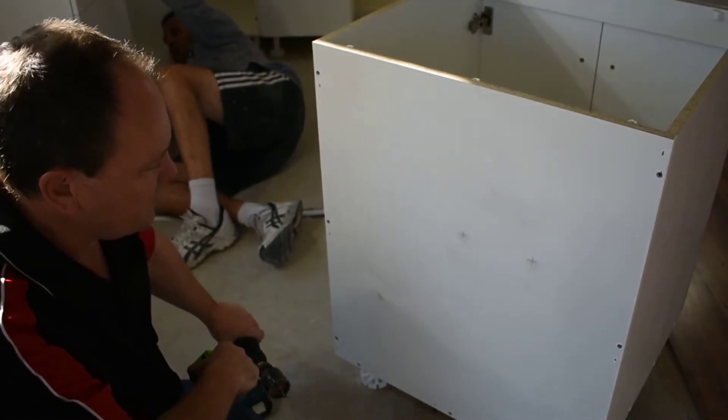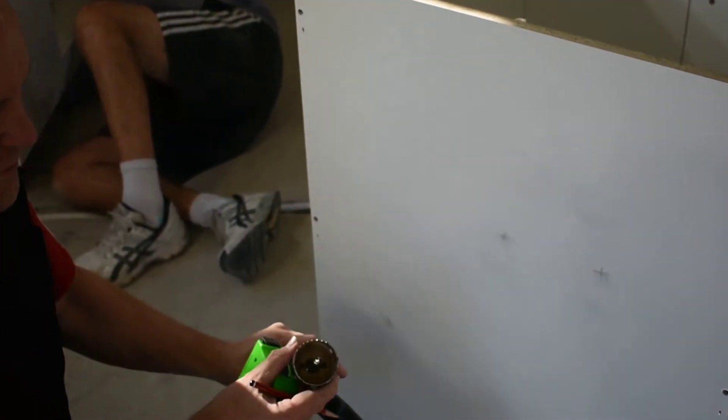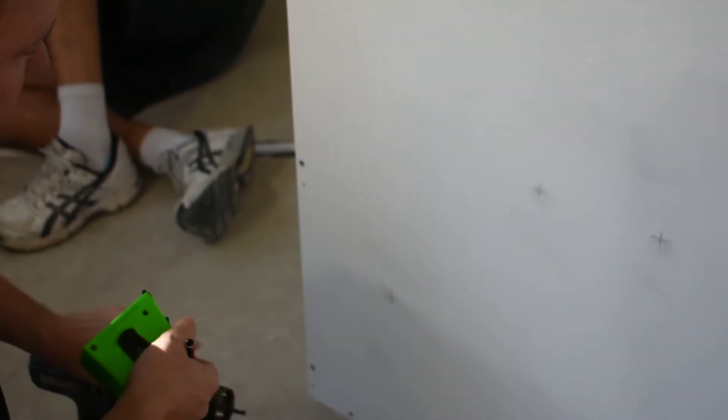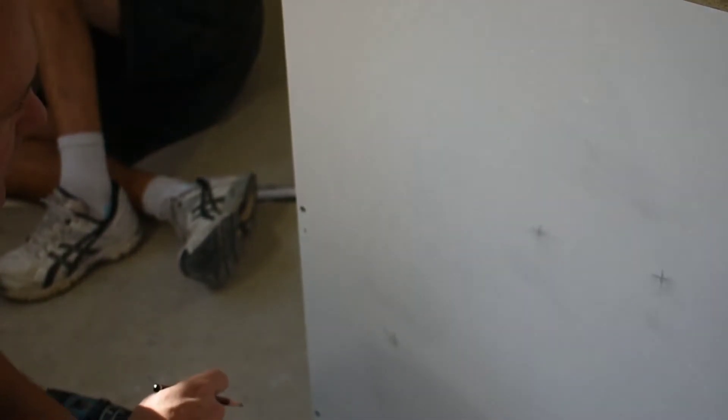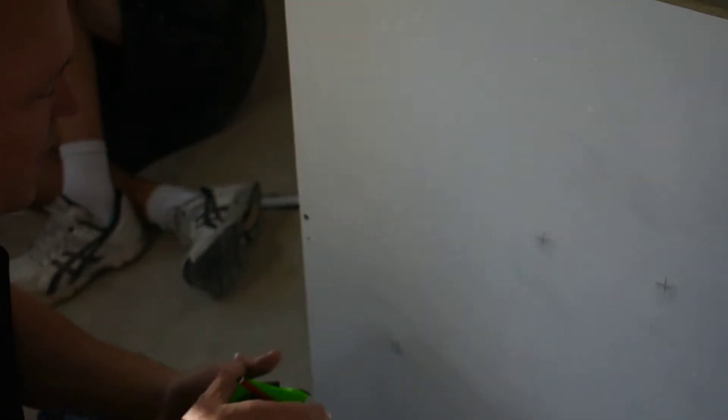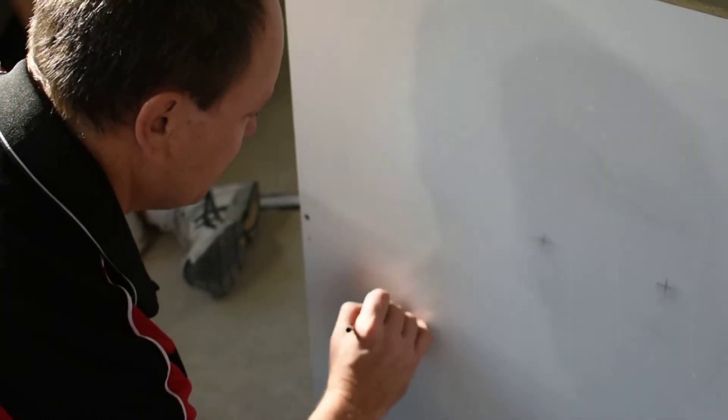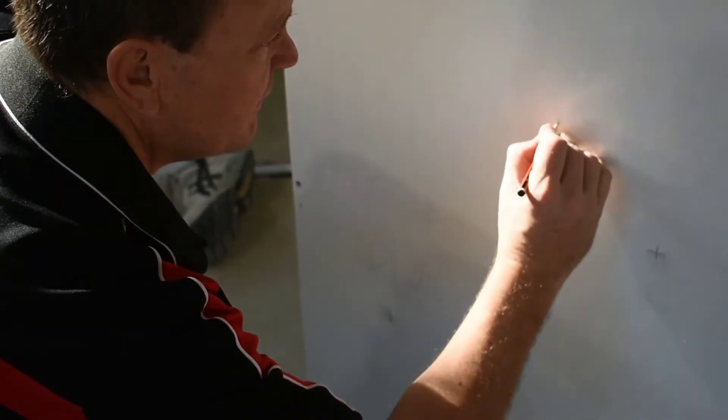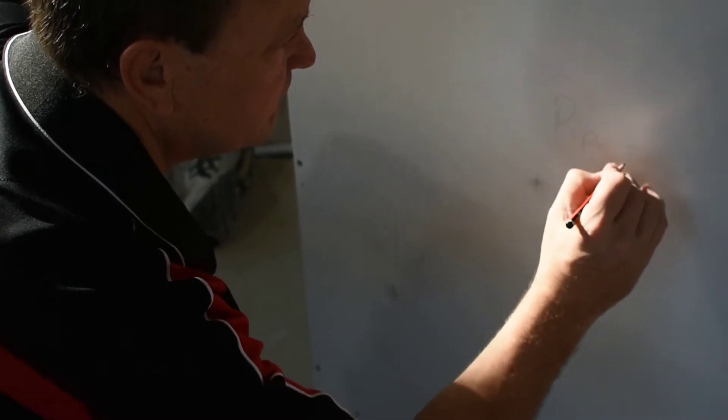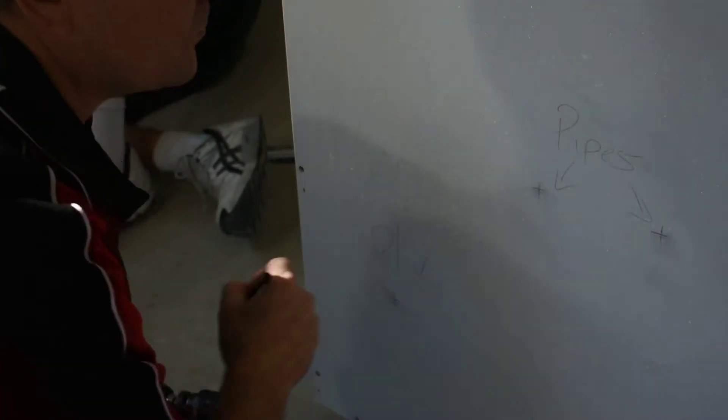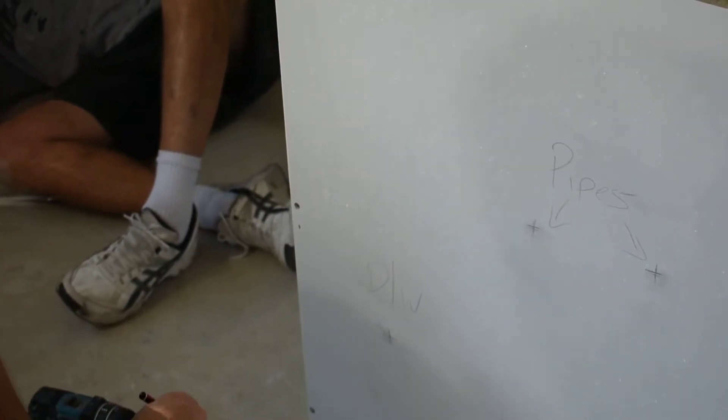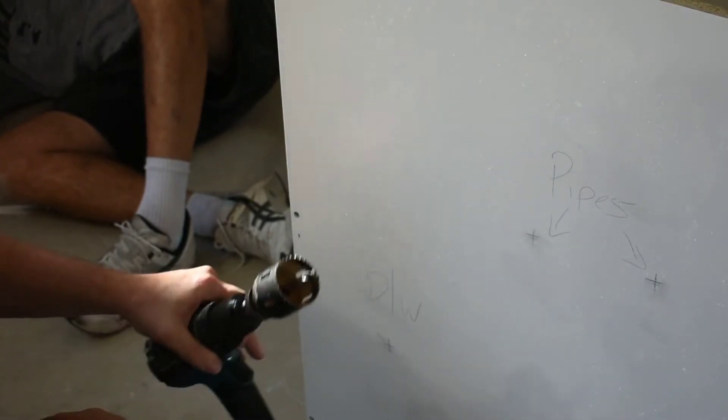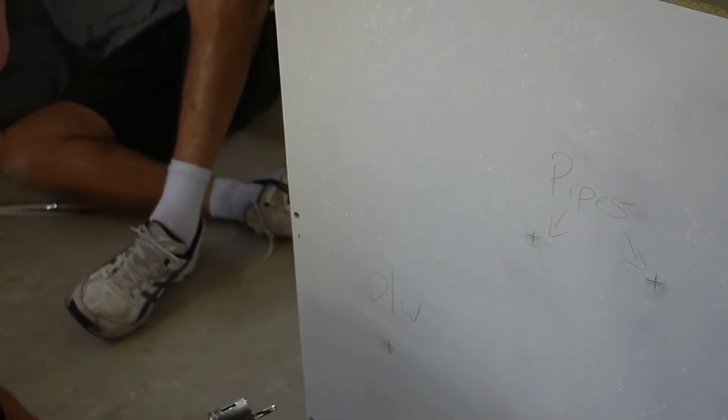Generally speaking, if it is a power point hole, we will use a 50mm diameter cutter to drill our hole for the power points, and we can use a smaller one if we need to for the actual pipes. If you need to, you can always just simply write on the cupboard what they are, just to make sure that you're using the correct hole saw to drill the correct hole.